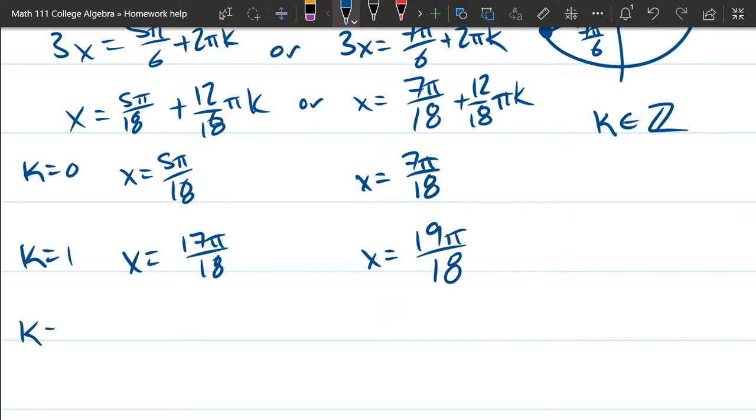I can keep going. k equals 2. x equals. So now it's a little bit more tricky because k is 2. So I'm going to get 24π over 18 plus 5 is 29π over 18. And we've got another solution over here. 12 times, when k is 2, we've got 12 times 2 is 24 plus 7, 31.